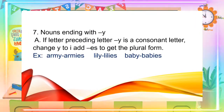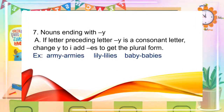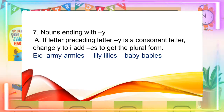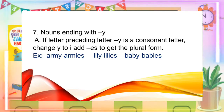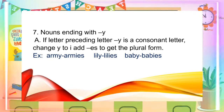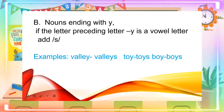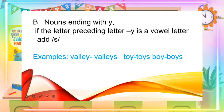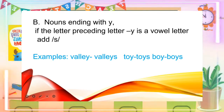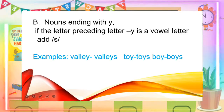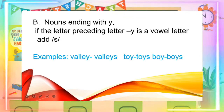Rule number seven: nouns ending in Y — if the letter preceding Y is a consonant letter, change Y to I and add ES to get the plural form. Example: army, armies; lily, lilies; baby, babies. Nouns ending in Y — if the letter preceding Y is a vowel letter, add S. Examples: valley, valleys; toy, toys; boy, boys.